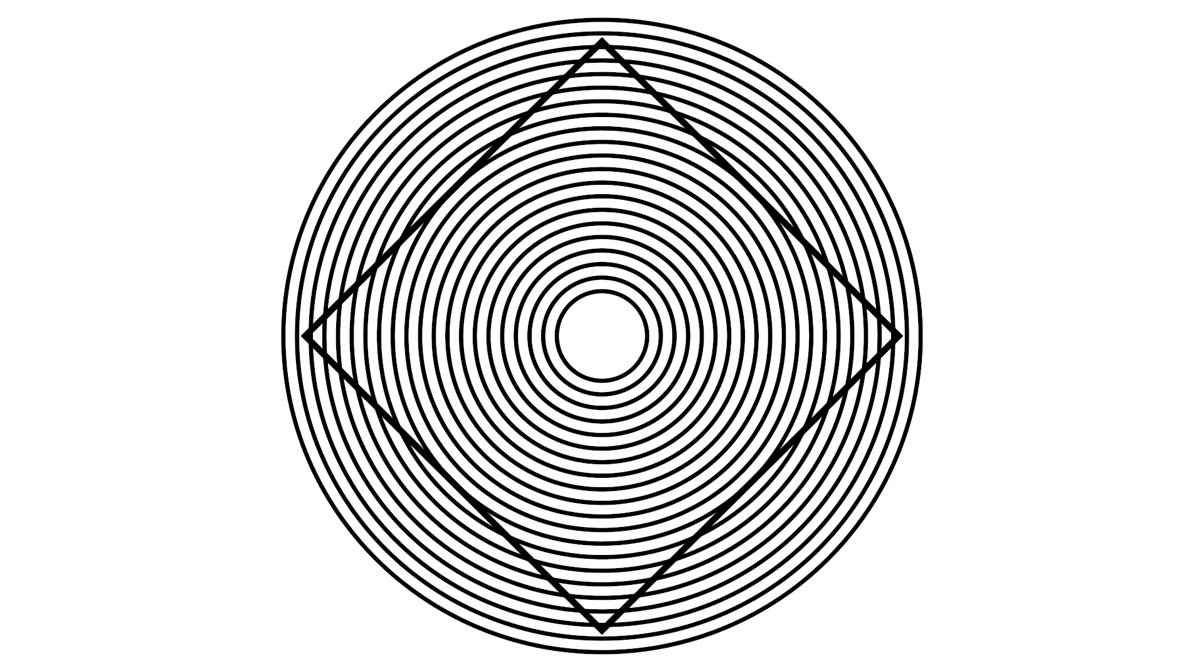Ehrenstein Illusion. The sides of a square placed inside concentric shapes take a fake curved shape, like a shuriken.